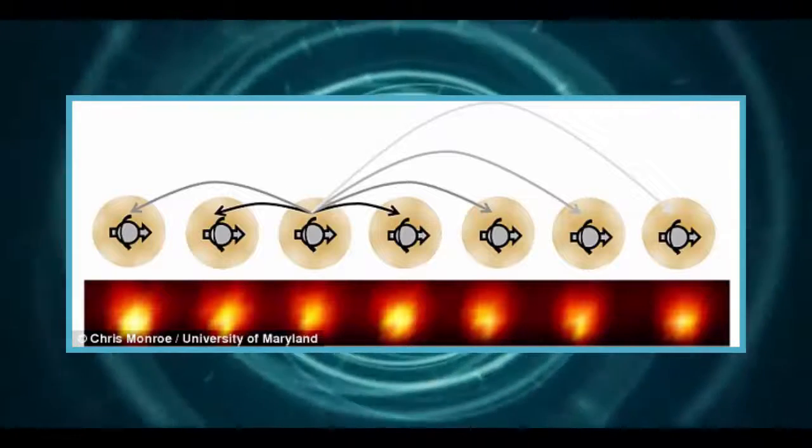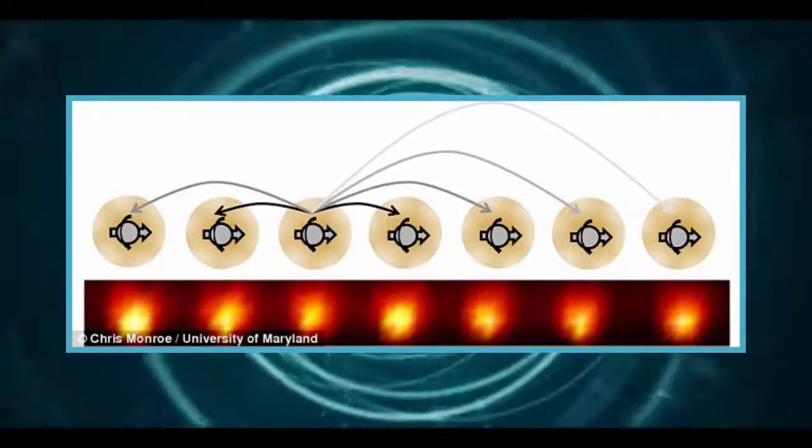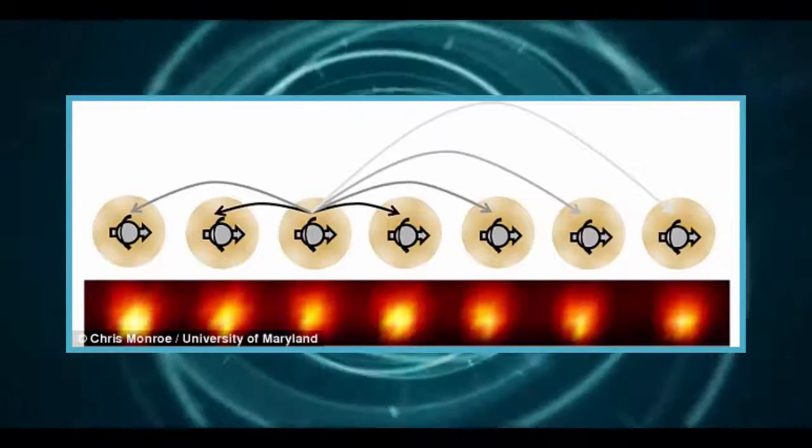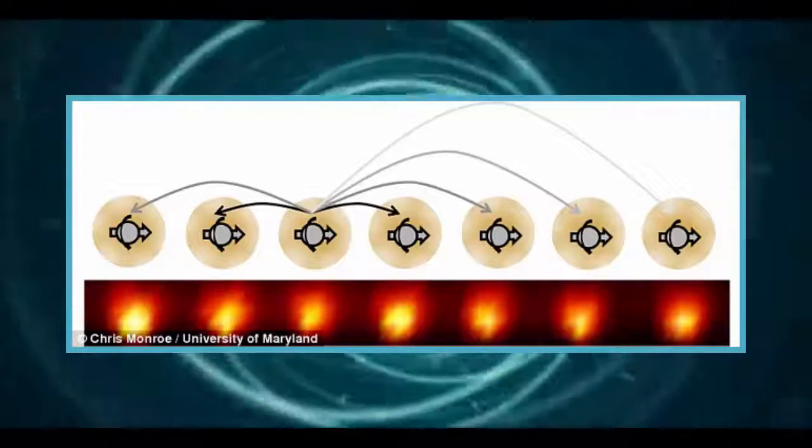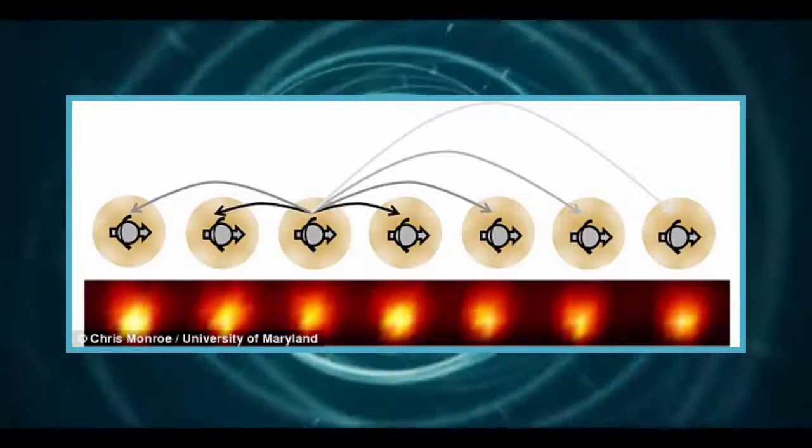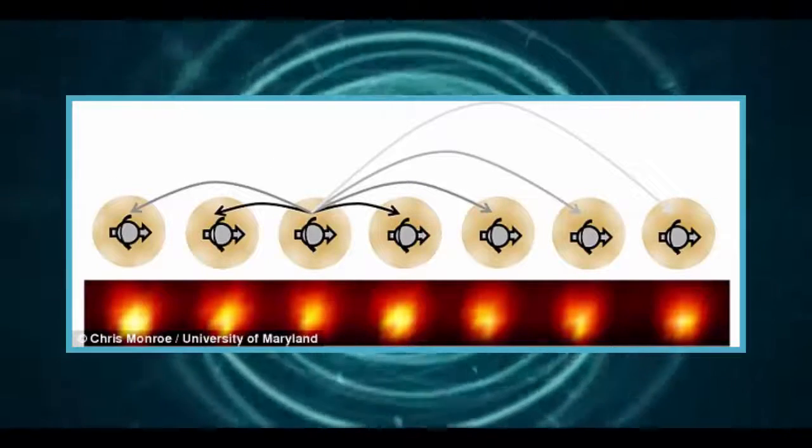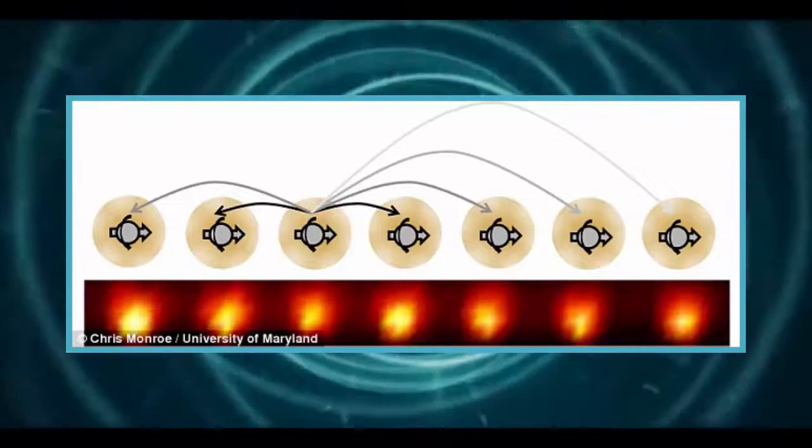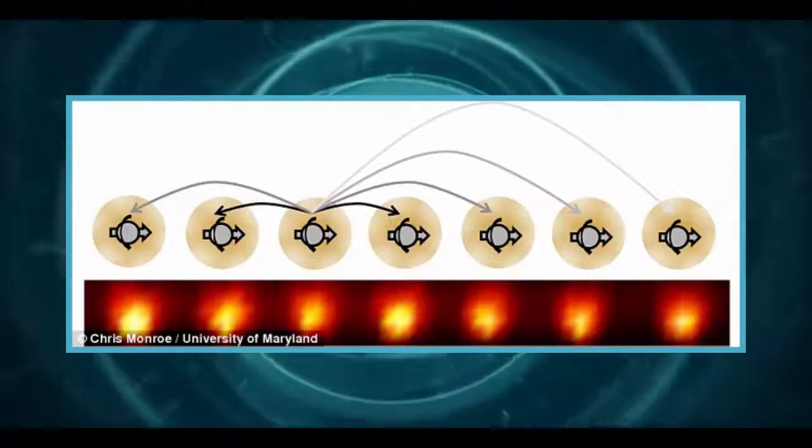Findings from both studies are being published this week in the journal Nature. The strange time crystals are made up of interacting atoms that never settle down to thermal equilibrium. Their structure repeats in time as they are kicked periodically, similar to the way jello jiggles when it is tapped.